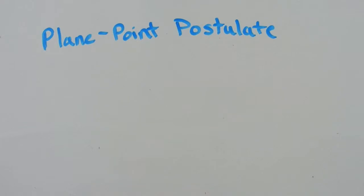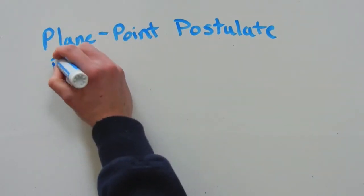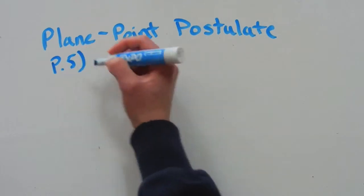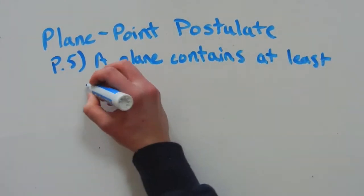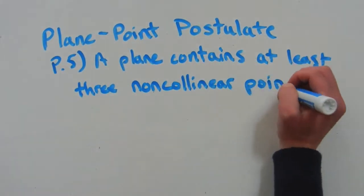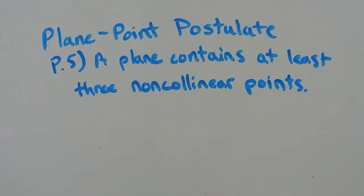The next postulate is the plane point postulate, and this is the fifth one we're going over, so I'm going to call this P5. This states that a plane contains at least three non-collinear points. The plane point postulate is very similar to the line point postulate, because the line point postulate stated that a line contains at least two points, whereas now we're dealing with a plane to a point as opposed to a line to a point. A plane contains at least three non-collinear points.